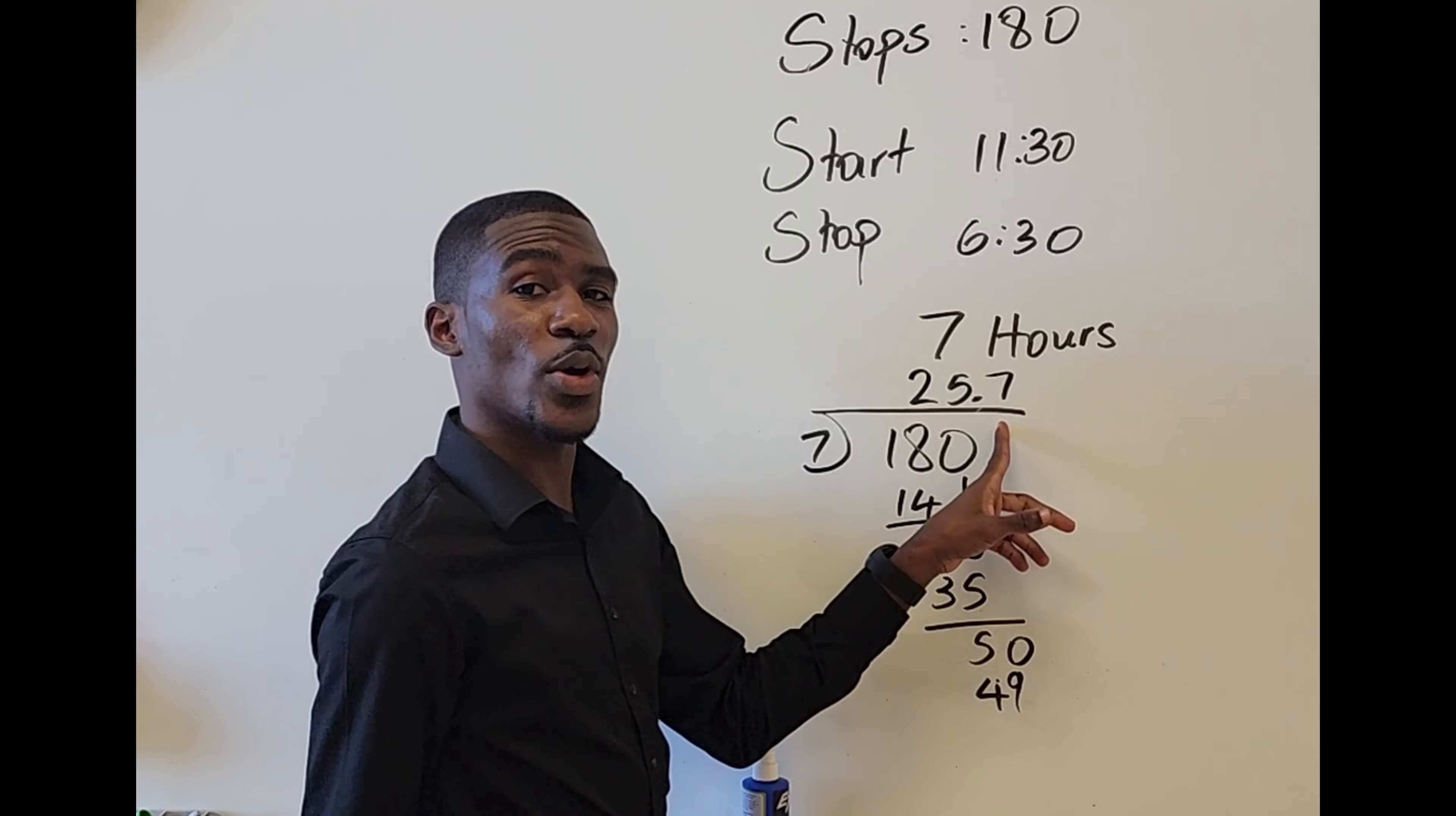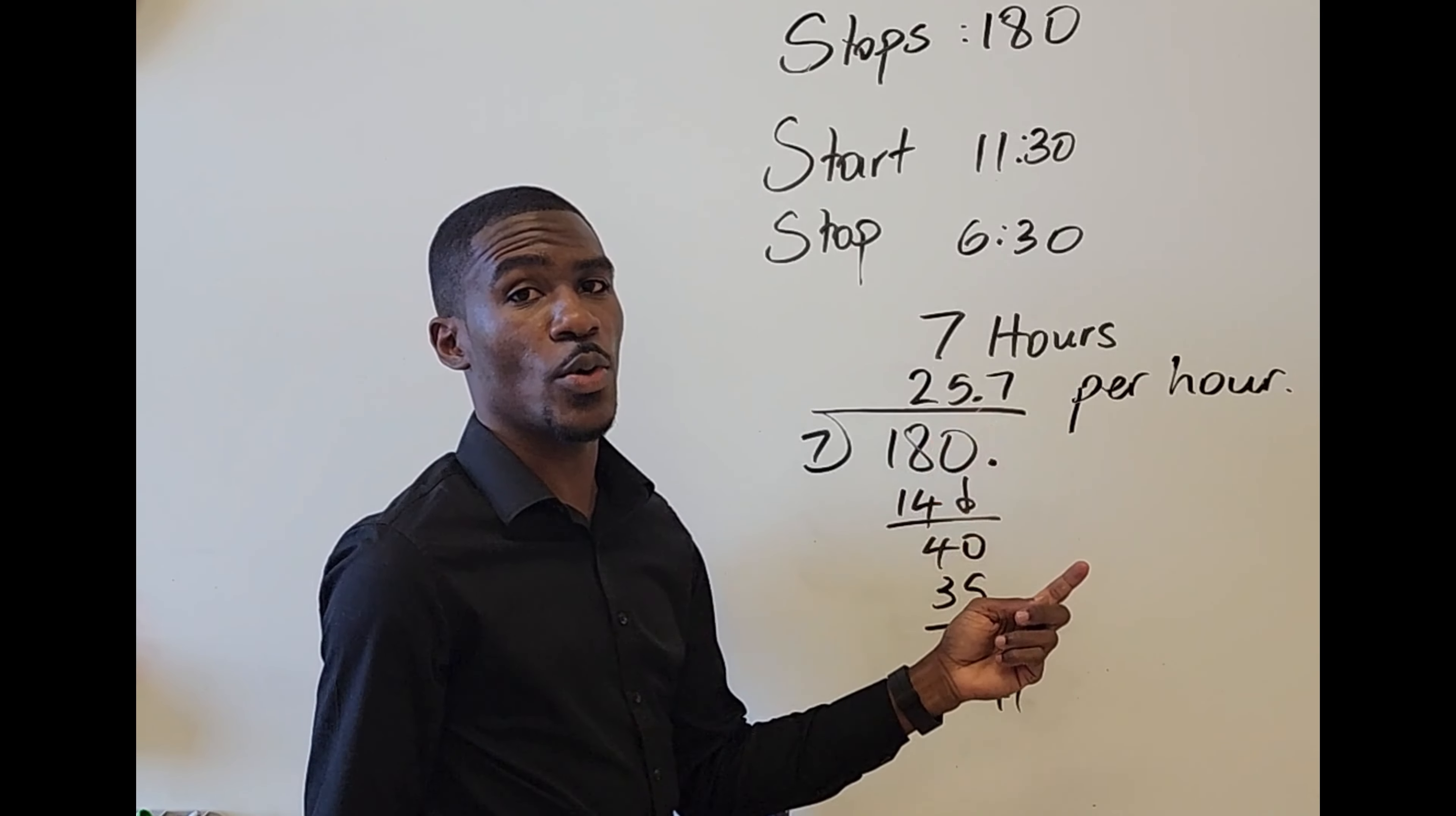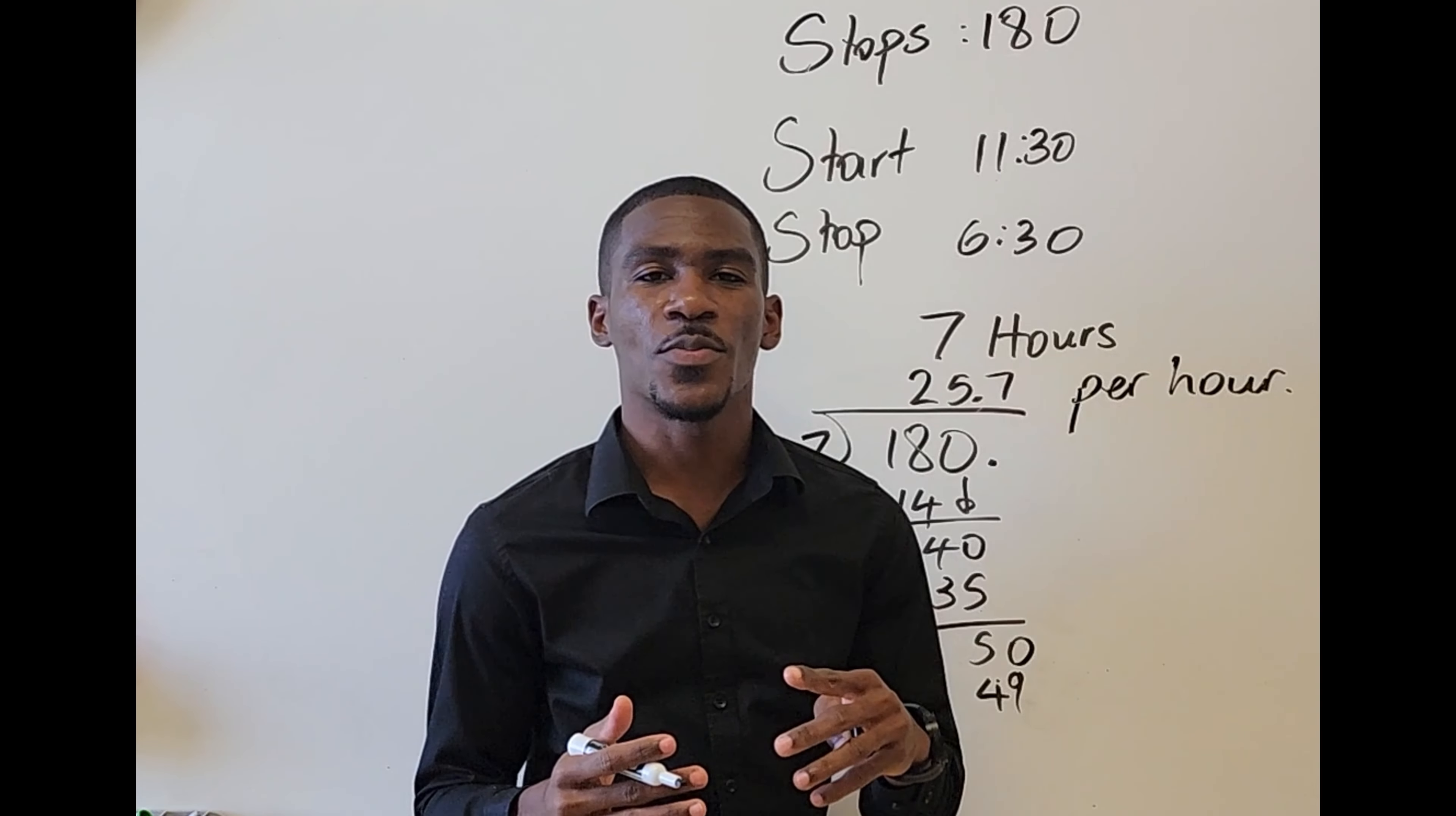So this is 25 per hour. So 25 stops per hour. But what I would do is bump it up to 27 or 29 because I want to account for my two 15-minute breaks. If you have apartments, then that means you just have to move faster.